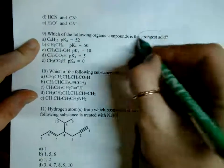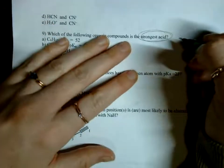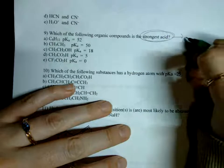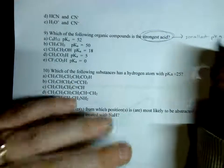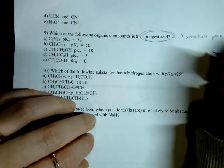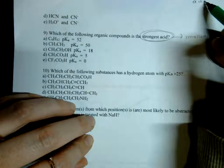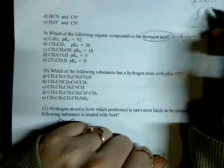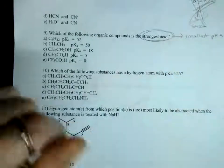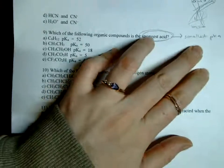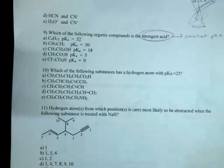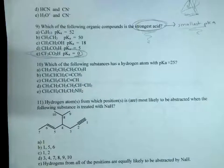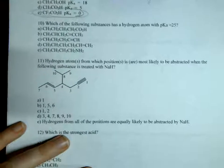Which of the following organic compounds is the strongest acid? This always trips me up, so I write it out every time: strongest acid is the smallest pKa. I think I memorized the chart from most acidic, and when I think highest pKa I think highest on the chart — that's wrong. You want the lowest number for the most acidic. The smallest pKa value here is zero, so that's the right answer.